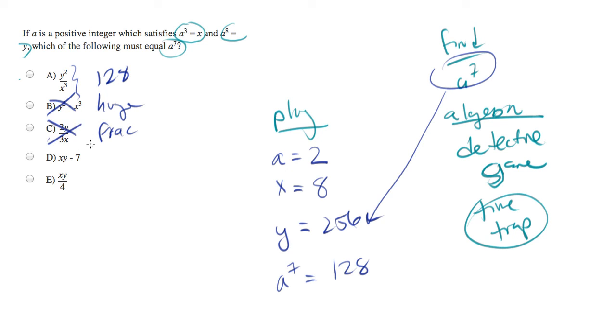And let's do D. I can already tell it's not going to work. 2 times 256 minus 7 is some weird number. It's 256 minus 7.